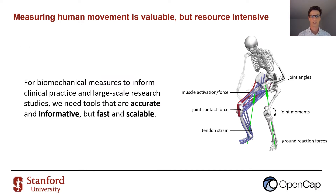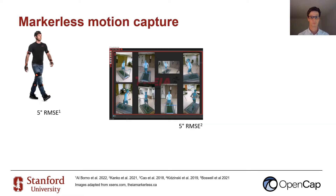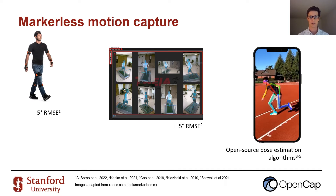For biomechanical measures to inform clinical practice and large-scale research studies, we need tools that are as accurate and informative as motion capture but much faster and more scalable. Several simpler tools exist for accurately measuring kinematics. Inertial measurement units and commercial markerless motion capture systems can measure kinematics with five degrees of error. Another potentially very scalable technique is using open-source pose estimation algorithms like OpenPose on videos collected from smartphones. These key points have been used as input to deep learning models to predict some task-specific biomechanical quantities. However, this approach isn't generalizable enough to replicate the motion capture lab.